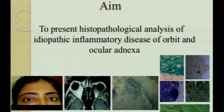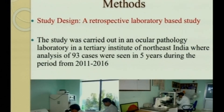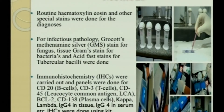The aim of the study is to present a histopathological analysis of idiopathic orbital inflammation of ocular adnexa. This was a retrospective, laboratory-based study carried out in an ocular pathology laboratory in a tertiary institute of northeast India, where analysis of 93 cases were seen over five years from 2011 to 2016. Routine hematoxylin-eosin stain, GMS, AFB, and GIS were carried out, and immunohistochemistry for CD3, CD20 (B cell and T cell markers), along with lambda, kappa, and IgG4, and serum IgG4 were performed.